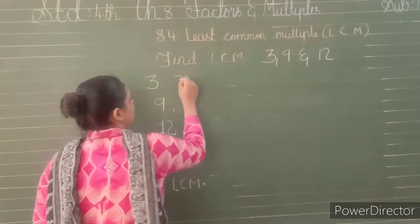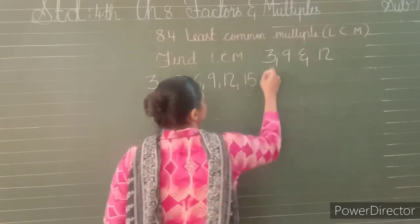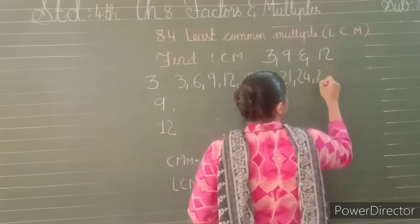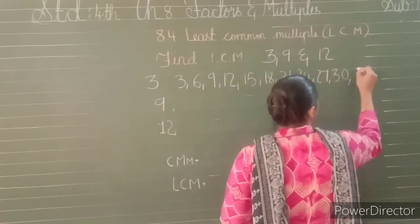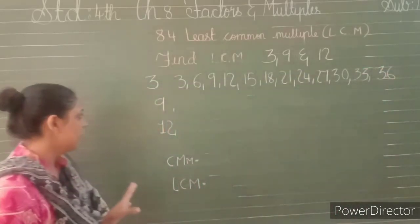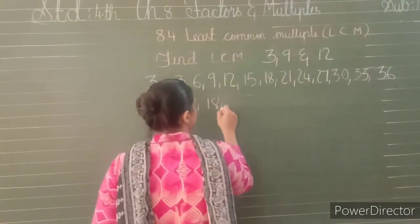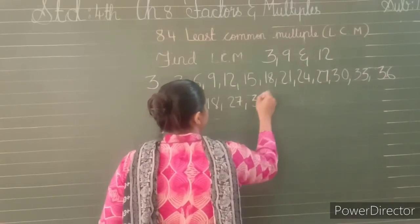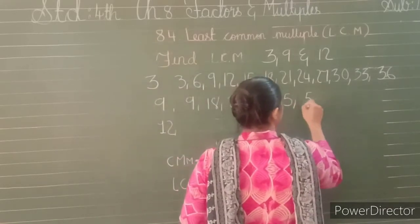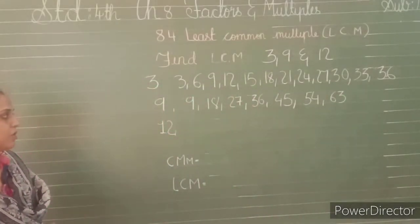Let us find out the multiples of 3: 3 ones are 3, 3 twos are 6, 3 threes are 9, 3 fours are 12, 3 fives are 15, 3 sixes are 18, 3 sevens are 21, 3 eights are 24, 3 nines are 27, 3 tens are 30, 3 elevens are 33, 3 twelves are 36. Till 36 we have found out. Now multiples of 9: 9 ones are 9, 9 twos are 18, 9 threes are 27, 9 fours are 36, 9 fives are 45, 9 sixes are 54, 9 sevens are 63.